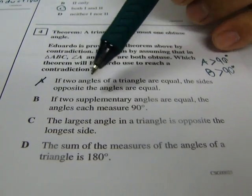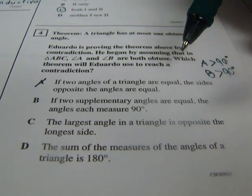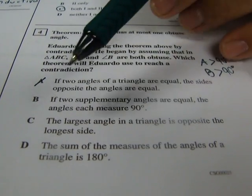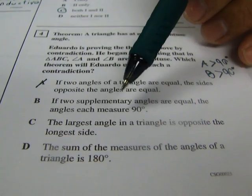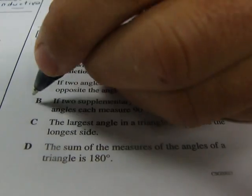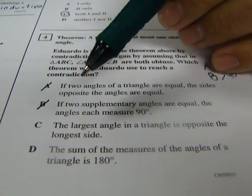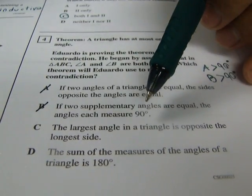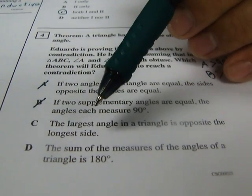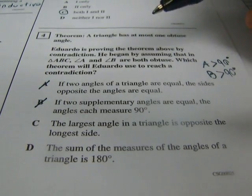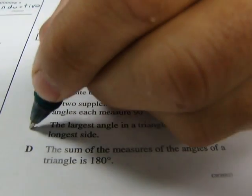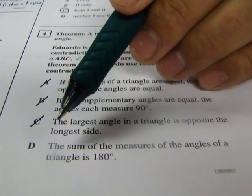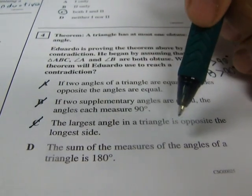B, if two supplementary angles are equal, again, nothing here is equal. The angles each measure 90 degrees. Completely, completely irrelevant to what we're reading. C, the largest angle in a triangle is opposite the longest side. Well, that's true, but again, it's really not relevant. I think it's going to have to be D. The sum of the measures of the angles of a triangle is 180.